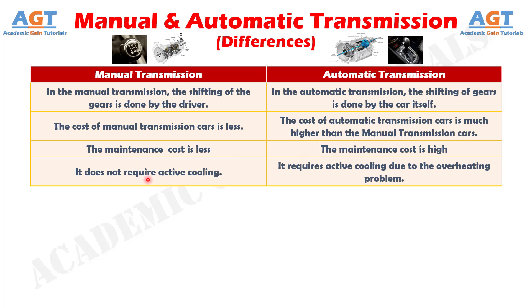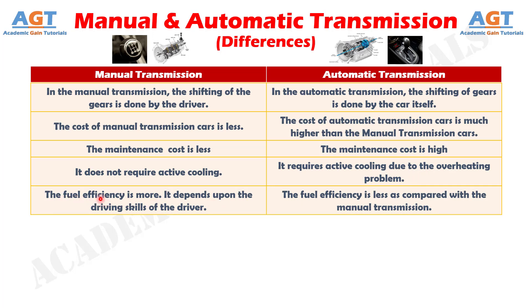Number 4. Manual transmission does not require active cooling, whereas automatic transmission requires active cooling due to the overheating problem. Number 5. The fuel efficiency is more in manual transmission, and it depends upon the driving skills of the driver, whereas the fuel efficiency in automatic transmission is less as compared with the manual transmission.